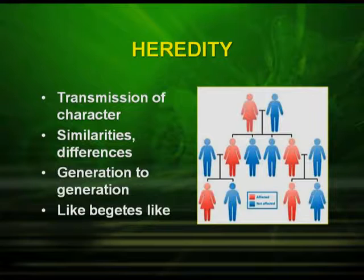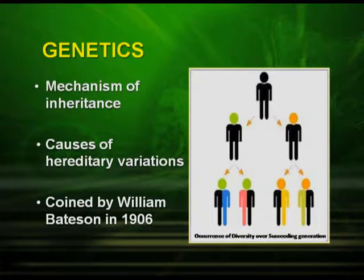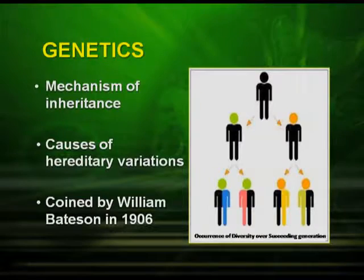Before we go into the details of Mendel's experiment, let us look at some important terms used in genetics. The first is heredity — the transmission of characters, similarities and differences, from generation to generation. Like begets like — similar organisms give rise to similar types. Genetics is the study of the mechanism of inheritance and the causes of hereditary variations. The term was coined by William Bateson in 1906.